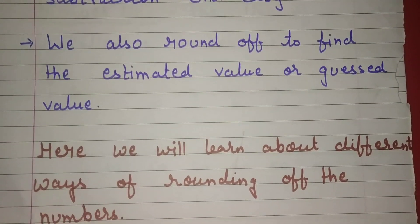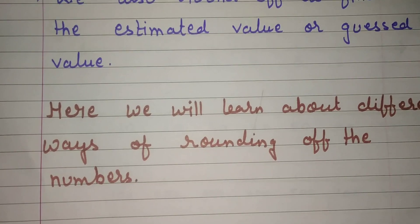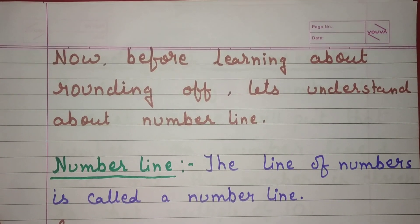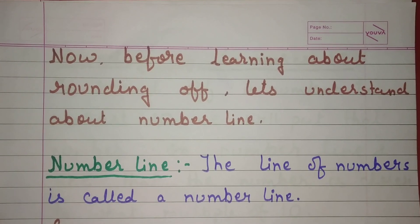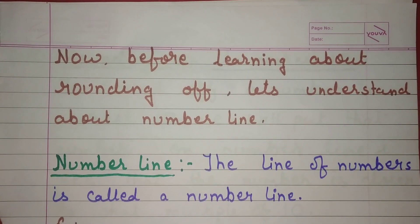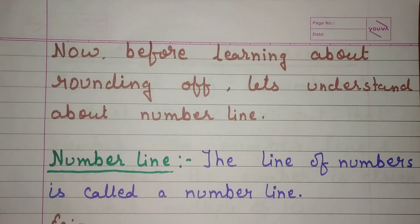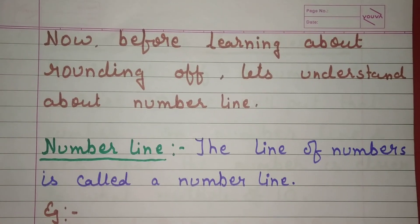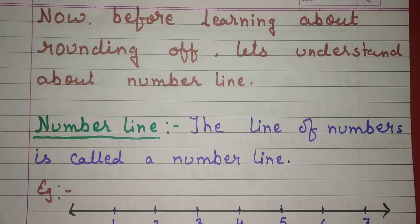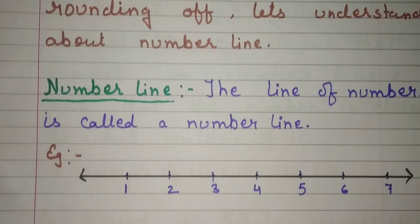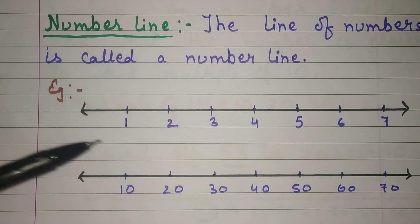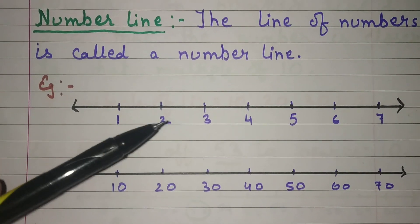Here we will learn about different ways of rounding off numbers. Now before learning about rounding off, let's understand the number line. What is a number line? A straight line with numbers written on it is called a number line.